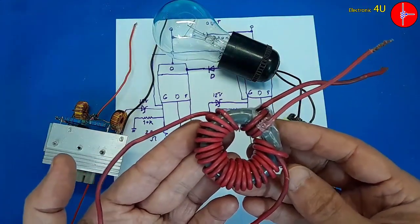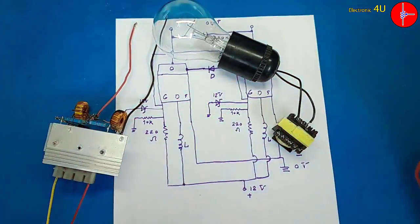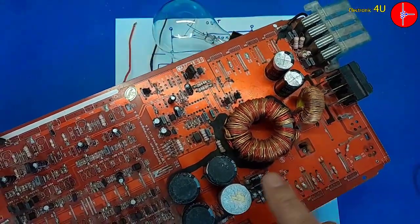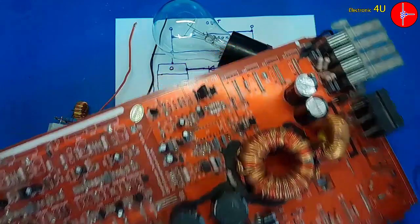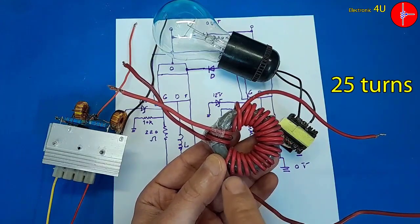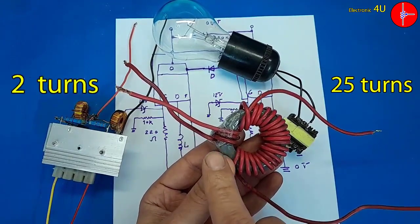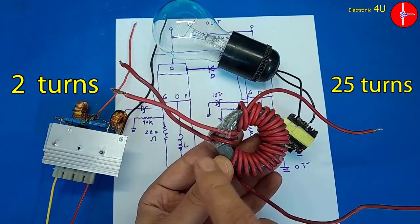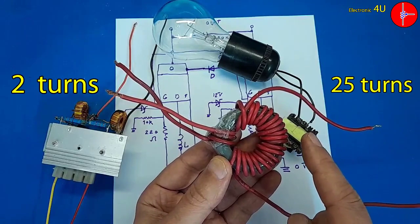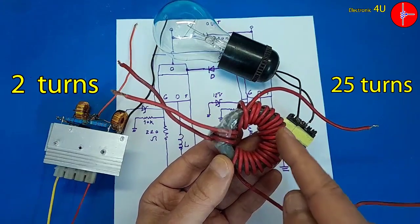Pay attention to this handmade transformer. I took this ferrite core from the car amplifier circuit. I put 25 turns of wire on it as the secondary coil. I only used 2 turns in the primary coil. If increase the number of turns of the primary coil, less current will be generated in the secondary side. Depending on the ferrite core dimensions, try different value to get the best result.